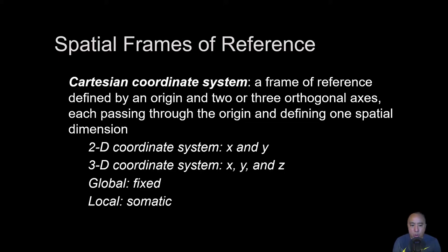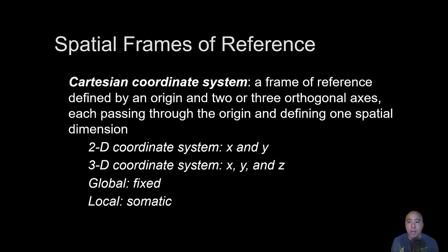From a mathematical or biomechanical perspective, any motion we measure of a system must be done with respect to what's known as a coordinate system or frame of reference. Just as giving directions requires a reference point, in biomechanics we have to make measurements with respect to a coordinate system. A Cartesian coordinate system is what we use — if you've taken pre-calculus, algebra, or geometry, you know what a coordinate system is.